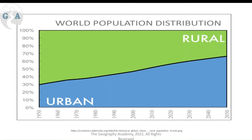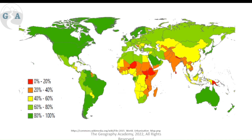We can see the expansion and growth of people living in urban areas. Urbanization is a global trend — around 2020 to 2030, about 50 percent of the world's population lives in urban areas globally, but that's not evenly distributed.